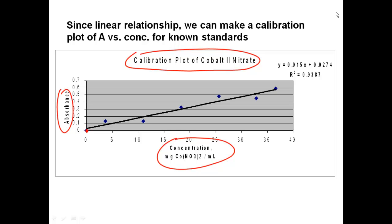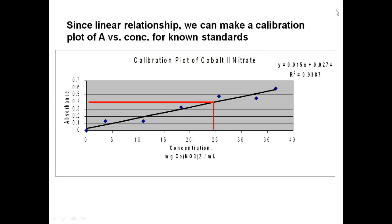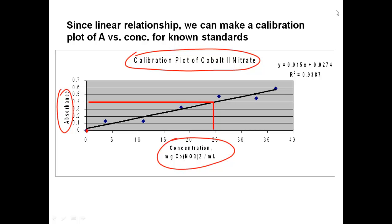Once you have your calibration plot, you can measure your unknown and get the absorbance. If the absorbance is 0.4, you go across on the plot until you hit the calibration line, then come down and read the concentration. You have to realize that concentration is that of a diluted sample. So if you want the bulk concentration, you're going to have to do another calculation, as discussed more later in this lecture.